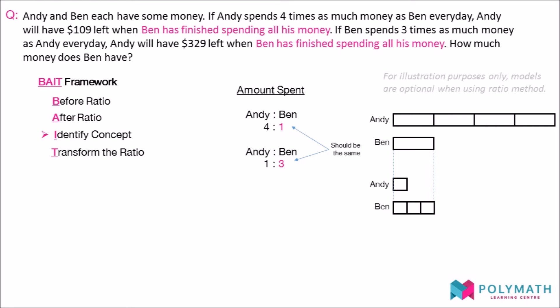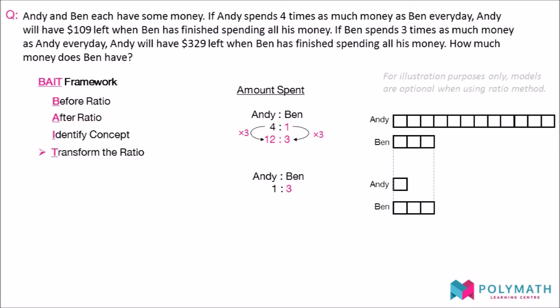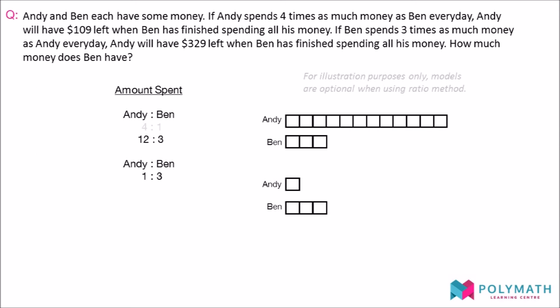Since Ben's portion is one unit in the first ratio, we multiply both sides of the ratio by three to change Ben's portion to three units. For the model, we cut the one unit that Ben has in the first model into three units. Concurrently, we also cut Andy's units into three units each. Thus, we will end up with Andy having 12 units and Ben having three units. We can now compare the before ratio with the after ratio as they have been transformed into the same sized units.